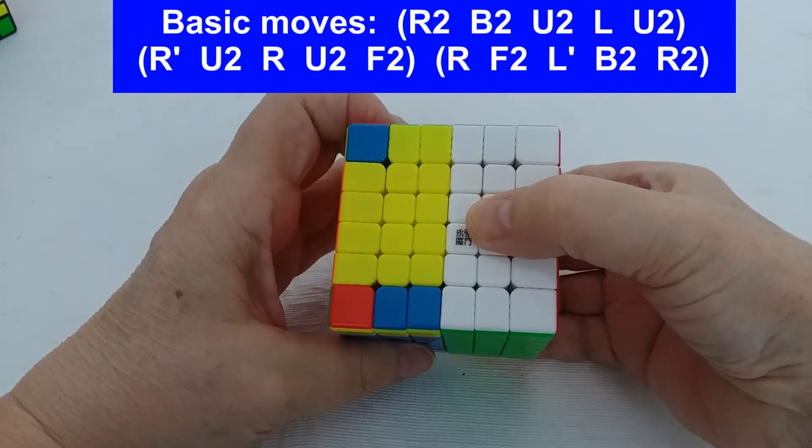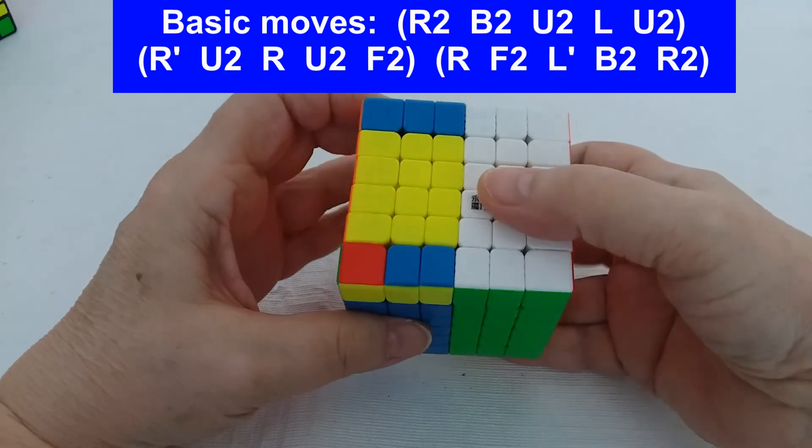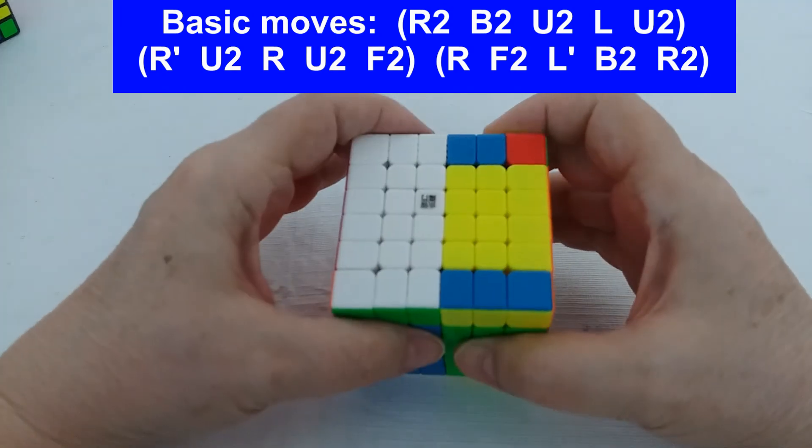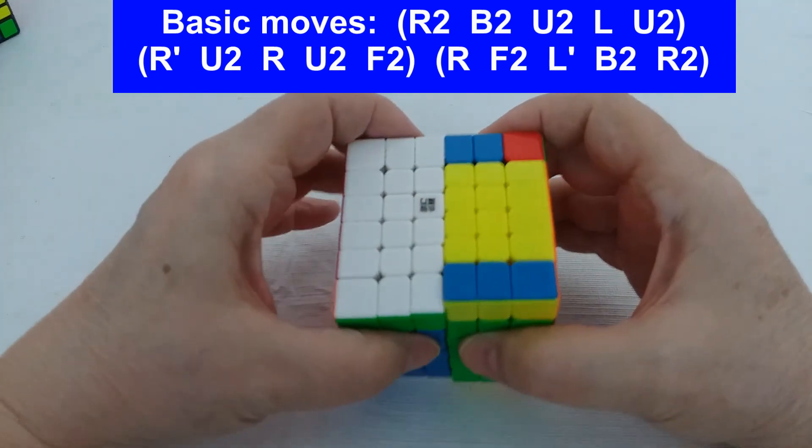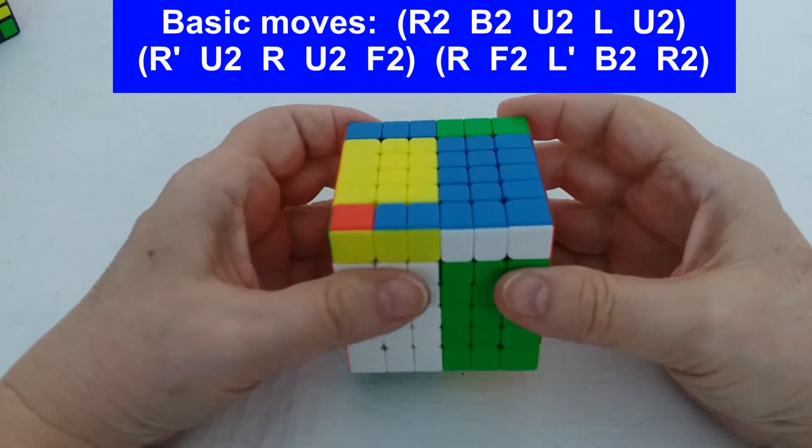We do an R2, which is really an R triple wide 2 but R2 basically, B2, U2, L - and so it's both of these toward me - and then a U2.